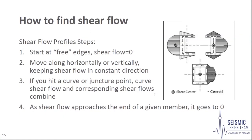To find shear flow, consider these steps. First, shear flow at free edges not on the loading axis is zero — generally we start at the top of an element to find these free edges. Next, we move horizontally or vertically across a section, with shear flow increasing in a constant direction. At a juncture point, such as transitioning from two flanges to a web in an I-beam, the shear flow combines. Shear flow increases until the neutral axis and begins decreasing after. Finally, as shear flow approaches the bottom free edges, it goes to zero. Shear flow profiles for a variety of shapes are shown in the figures on the right.